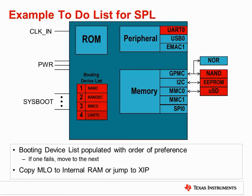The memory or peripheral source from which the ROM bootloader will load the SPL or uBoot is determined by a special set of pins called the boot mode pins. These pins are sampled at reset. There are four pins, each of which is tied to either a high or low voltage. This allows as many as 16 combinations of boot mode. Some of these boot modes will try only a single source, such as the NAND flash, and if that source does not provide a valid image, will exit with a failure. Many of the boot modes, however, will attempt to boot from as many as four different sources sequentially.